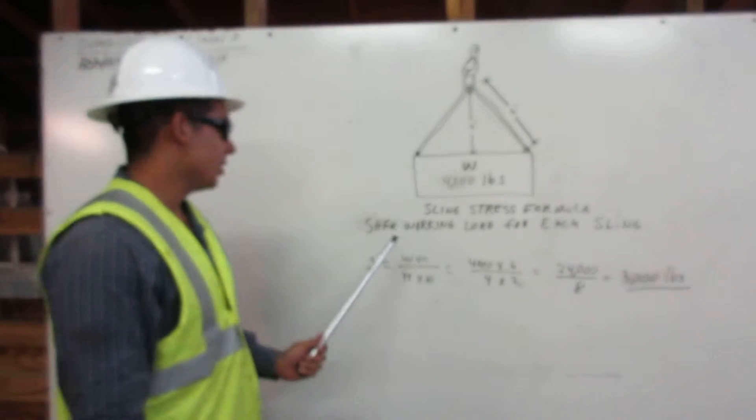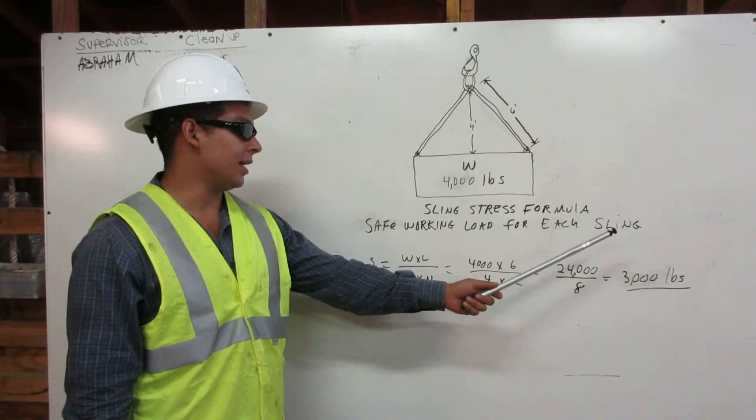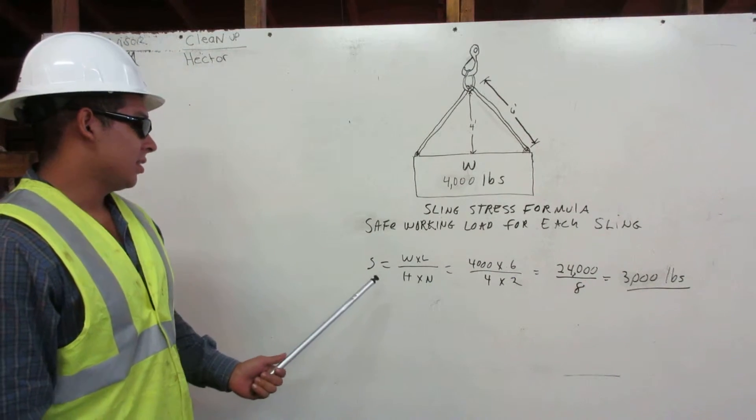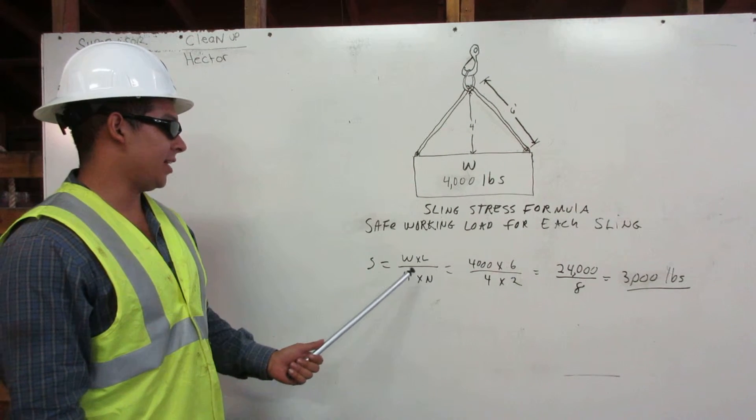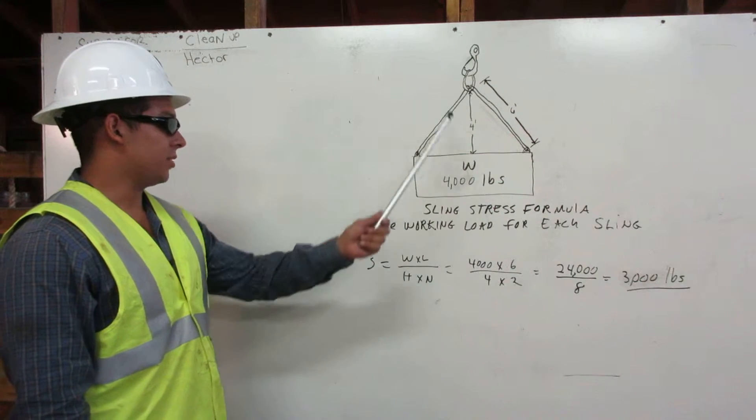Sling stress formula: safe working load for each sling. Sling stress formula equals weight times length divided by height divided by the number of slings.